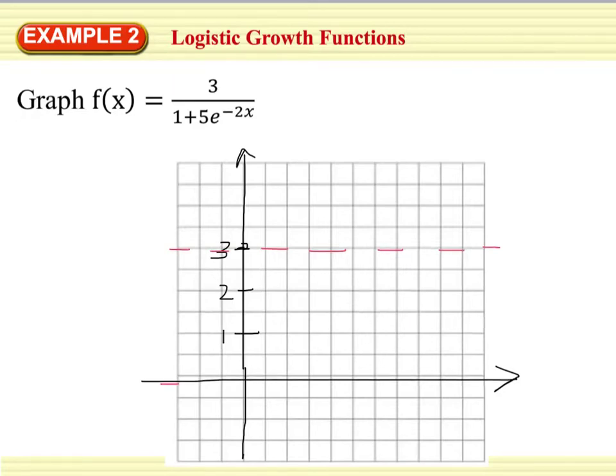We have a y-intercept at 3 divided by 1 plus 5, which is 3/6 or 1 half. So your y-intercept is going to be right here, and now if we go ahead and graph this, you'll see that we end up with something that looks like this. And again, please verify that you can do this on your calculator, and if you're having trouble, please let me know.